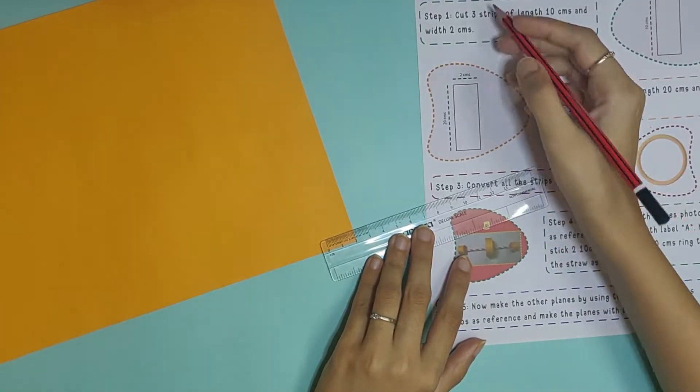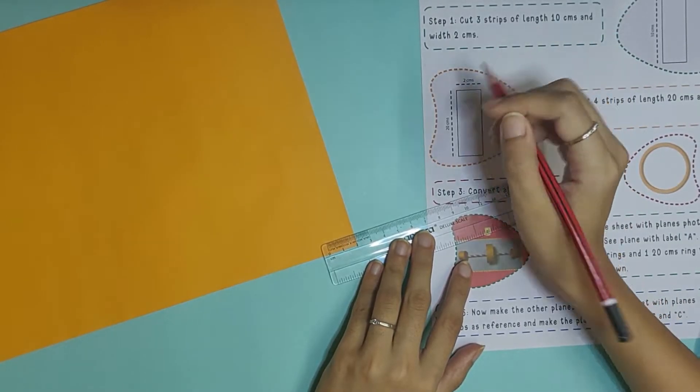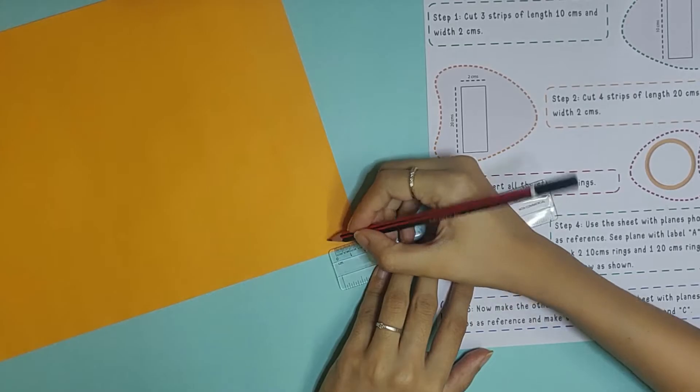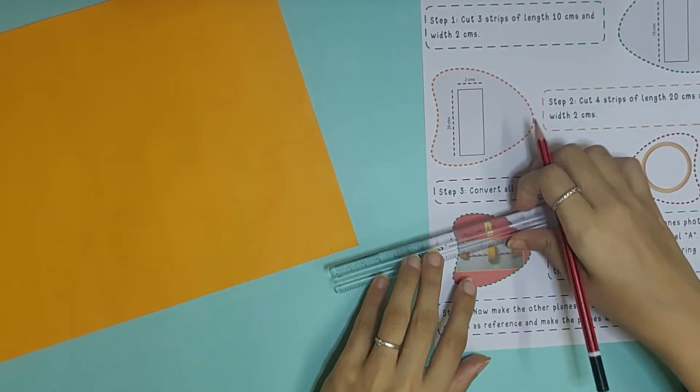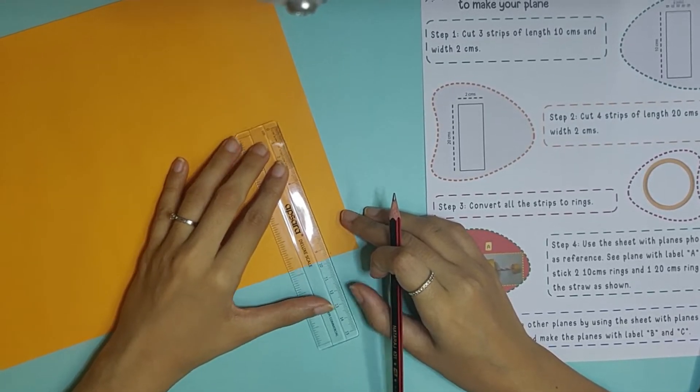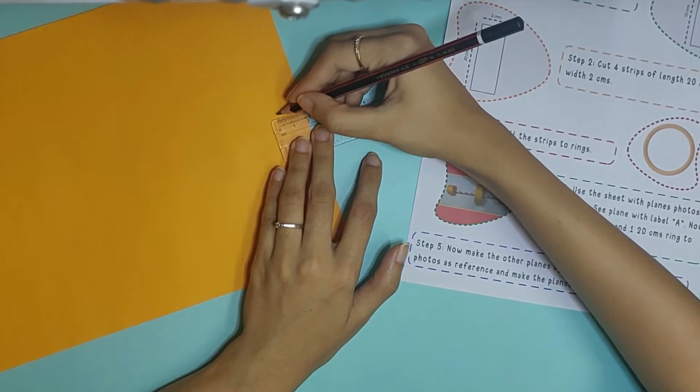Sheet three is the instruction sheet, so every step is written one after the other which is going to help you make your gliders. Lastly is sheet four. It's going to teach you how to fly the gliders and also there are a couple of questions. So guys, get ready to make your gliders.